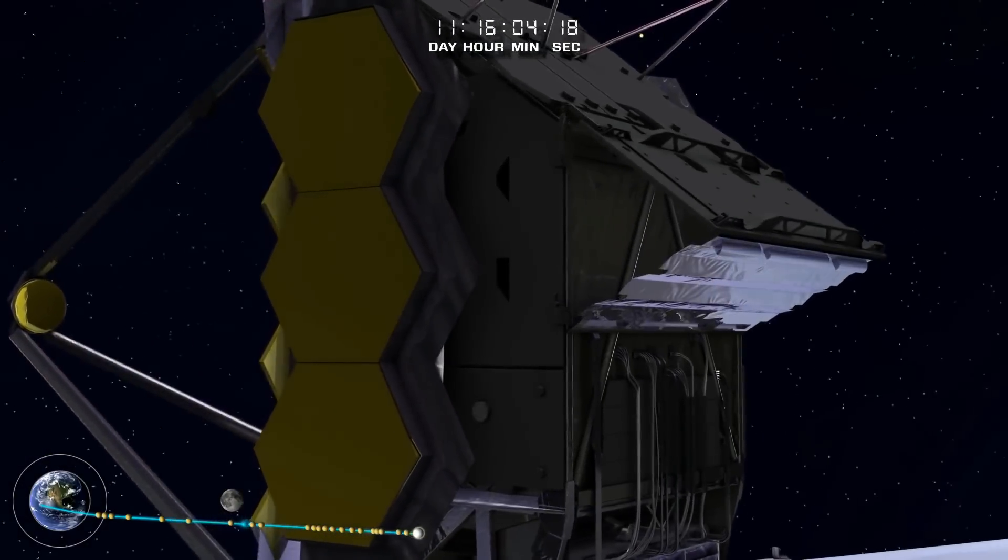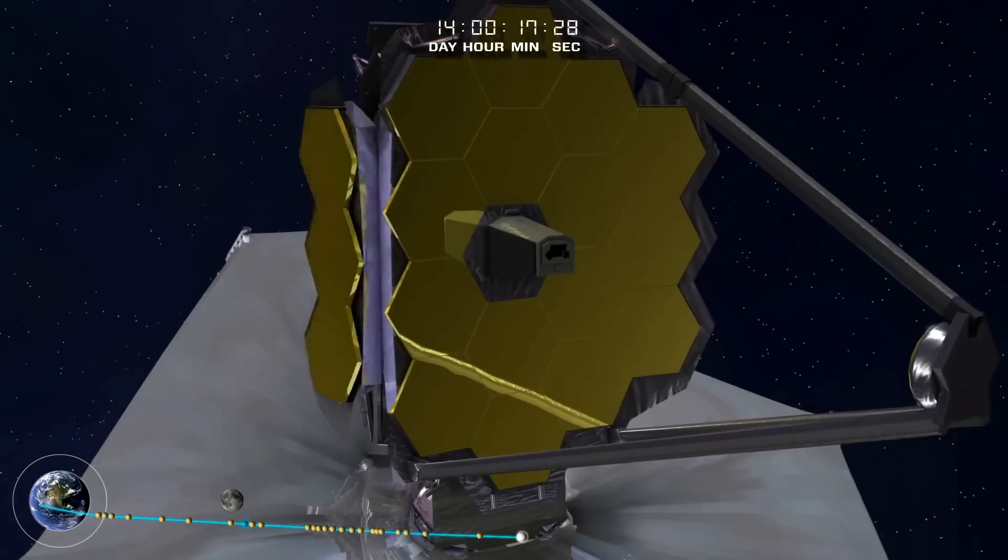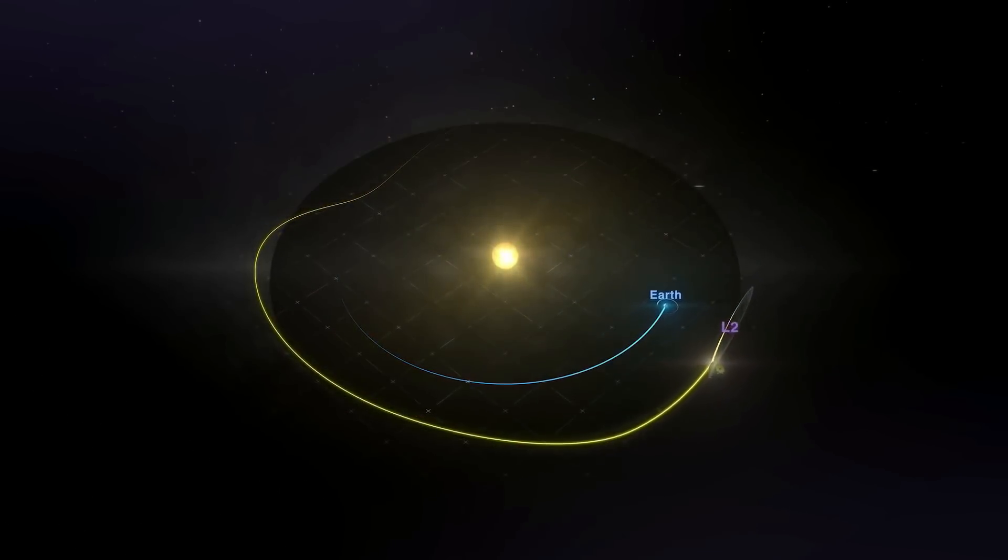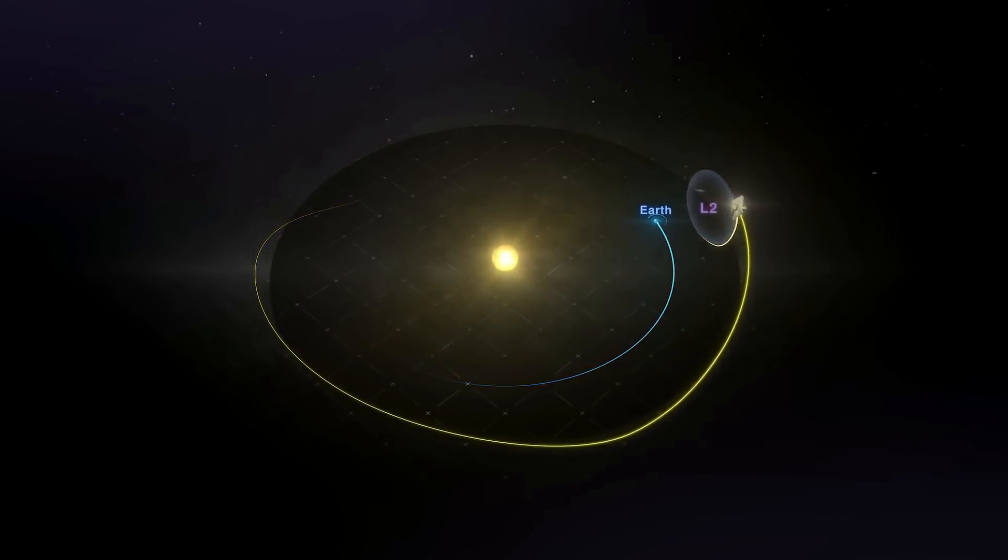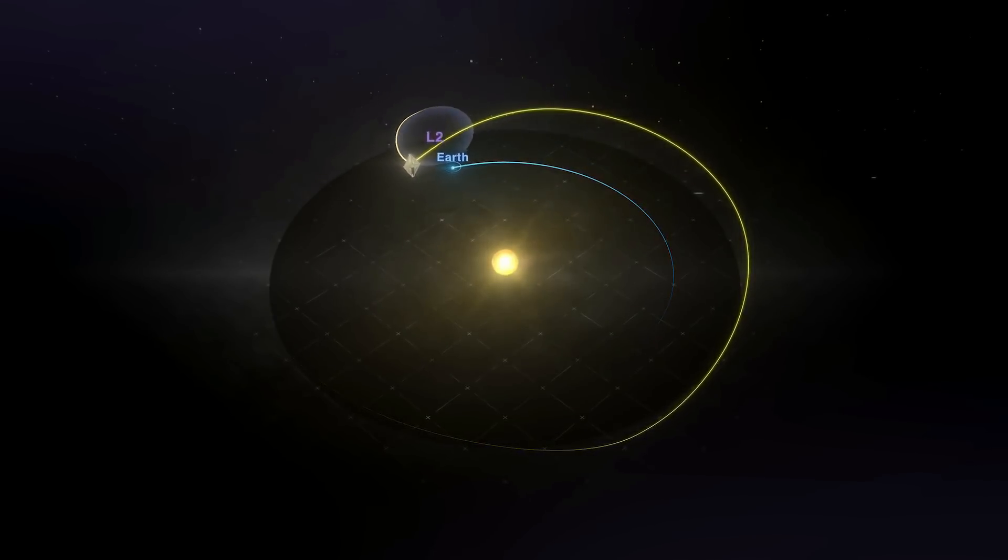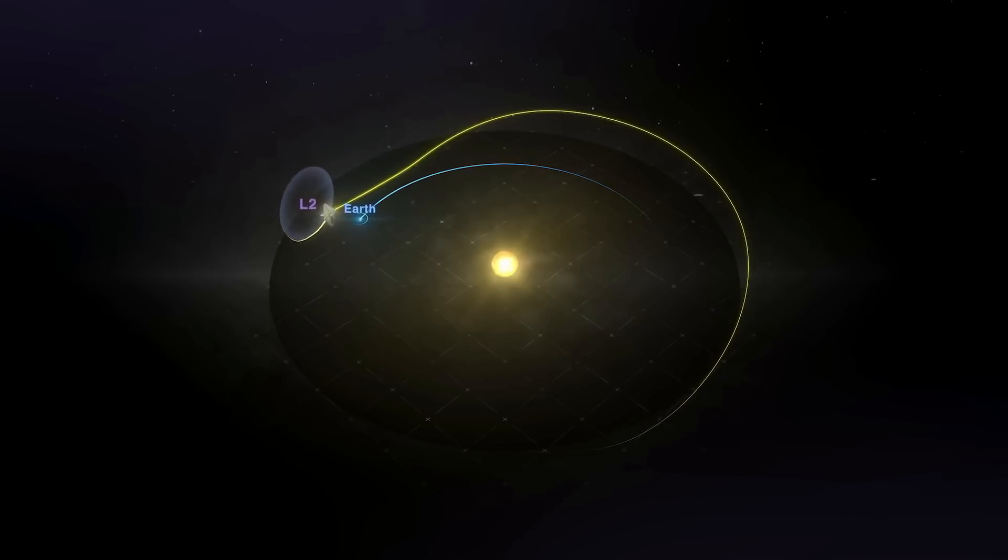Once it reached space, James Webb began a series of complex and lengthy procedures during its unfolding process. From launch, the telescope then traveled some 1.5 million kilometers, or 1 million miles, from Earth to its final destination called Lagrange Point 2.